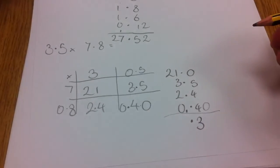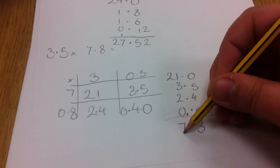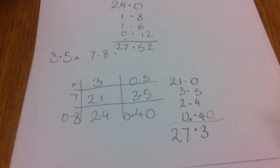Make sure my decimal point is in the right place. 1 plus 3 is 4, 5, 6, 7 and 2 plus nothing is 27.3. And that's my answer.